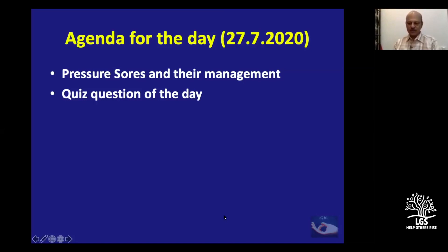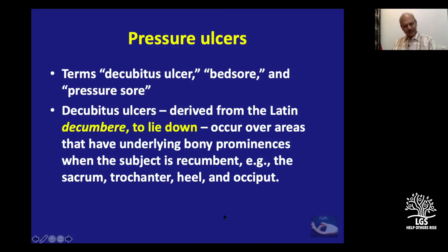Today's topic is pressure sores and their management. Pressure ulcers have been called by various terms: decubitus ulcer, bed sore, and pressure sore. Decubitus is derived from the Latin word 'decumbere' meaning to lie down. It occurs over areas with underlying bony prominences when the subject is recumbent — the sacrum, trochanter, heel, and occiput. But pressure ulcers are not just from lying down.